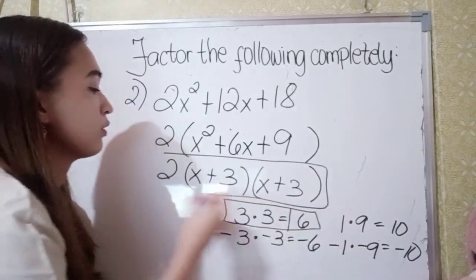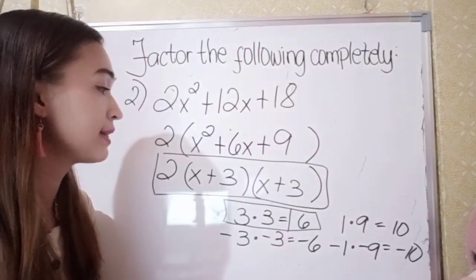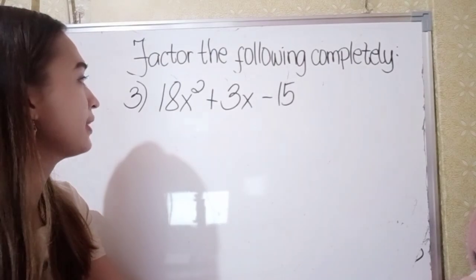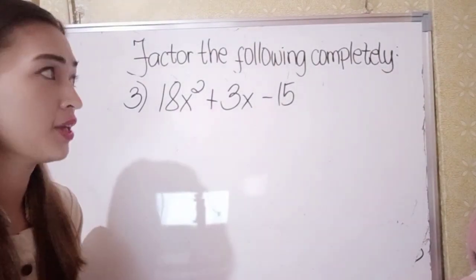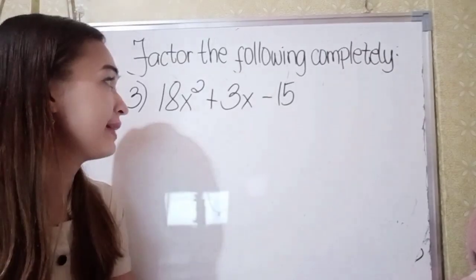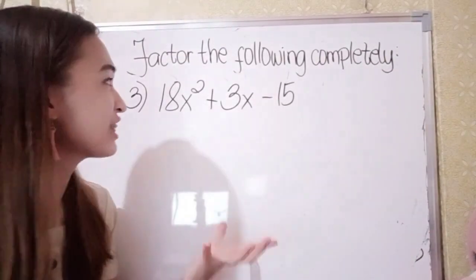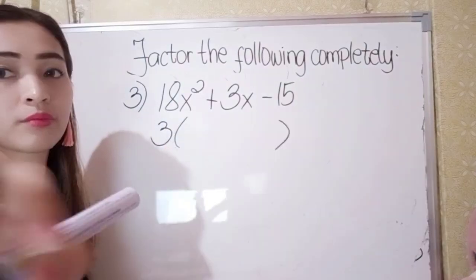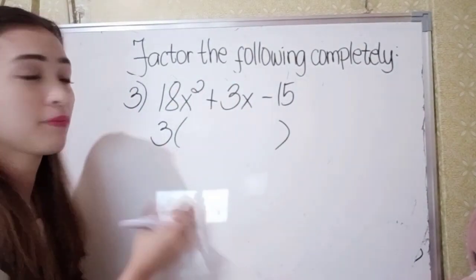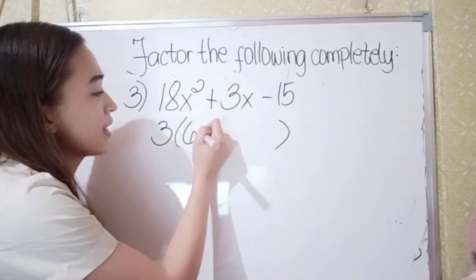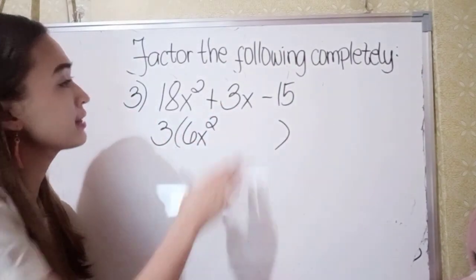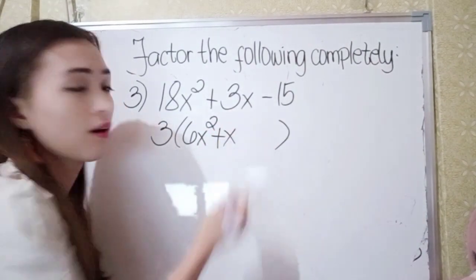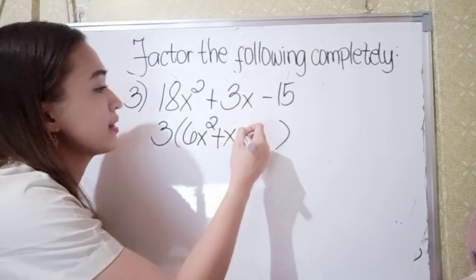Our answer in number 2 is 2 times (x plus 3) times (x plus 3). For number 3, we have 18x squared plus 3x minus 15. Think of a number that can divide 18, 3, and 15 — we have 3. So 18x squared divided by 3 is 6x squared, 3x divided by 3 is x, and negative 15 divided by 3 is negative 5.